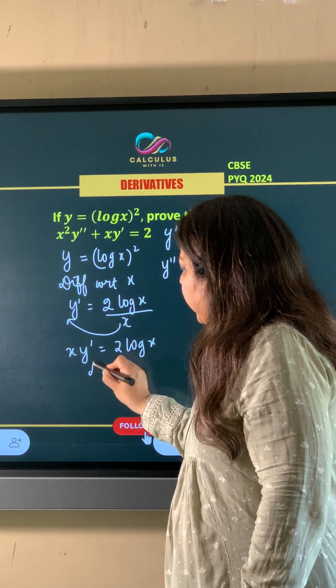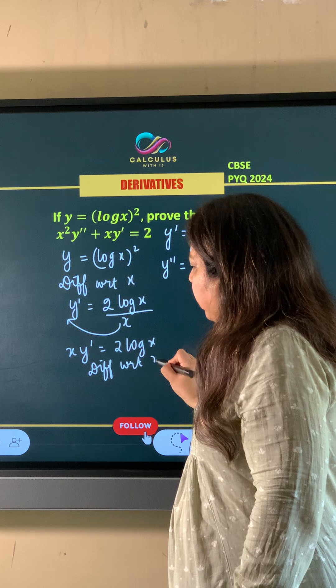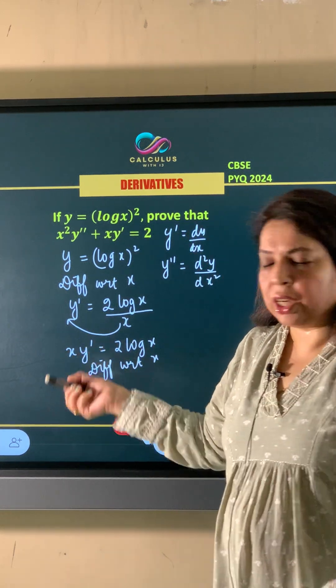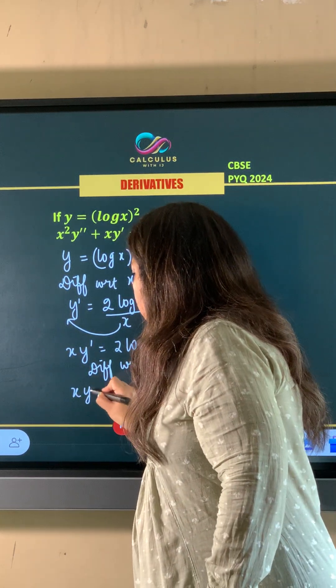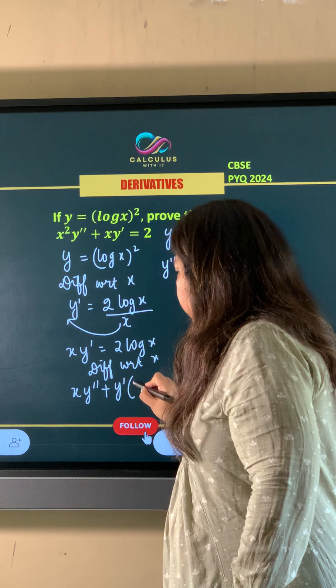Again, differentiating with respect to X, X into Y dash ka derivative is Y double dash plus Y dash into X ka derivative is 1.